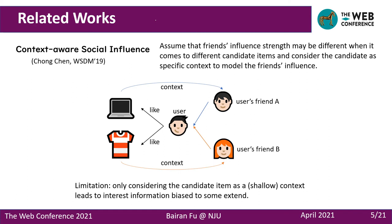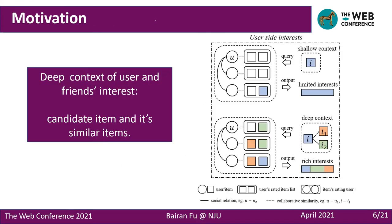Context-aware social influence methods assume that friends' influence strength may be different when it comes to different candidate items, and consider the candidate item as a specific context to model the friend's influence. However, the limitation of previous models is that they either ignore context information or only consider the shallow context when modeling user interests or item attraction.